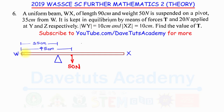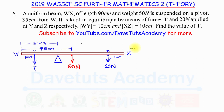The beam is kept in equilibrium by forces T and 20 N applied at Y and Z respectively. WY is 10 cm, so from W to Y is 10 cm, and at that point we have force T acting downward. XZ is 10 cm, so from X to point Z is 10 cm, where the 20 N force is applied.